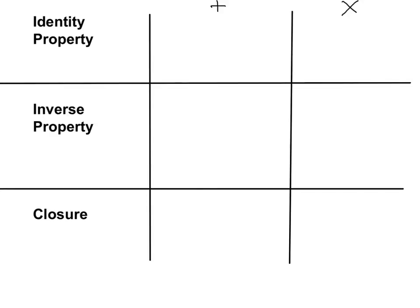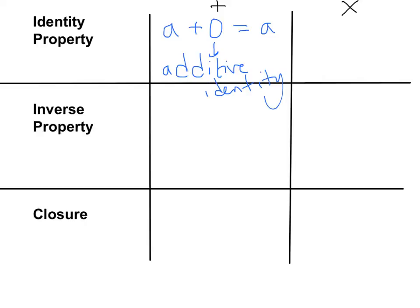You're going to have to know the names of these properties, so keep those memory tips in mind. Next up is the identity property. The identity property of addition has a new vocab term: a plus zero equals a, for any real number a. Adding zero to it doesn't change its value. You need to know that it's the identity property, and you need to know that zero is the additive identity. When you add zero, the number still stays identical — that's where identity comes from.